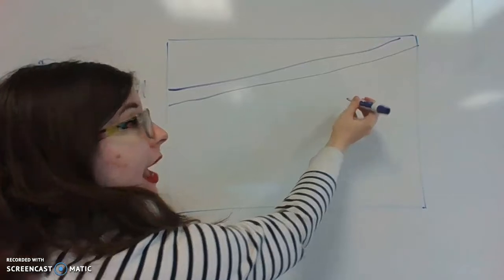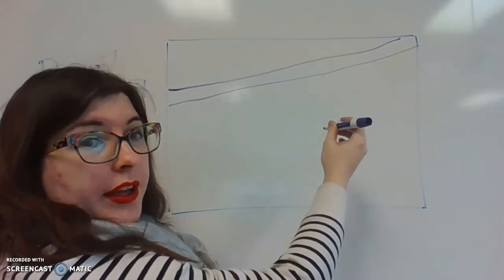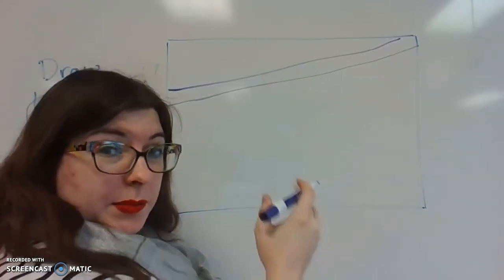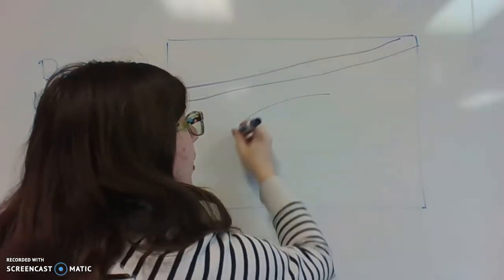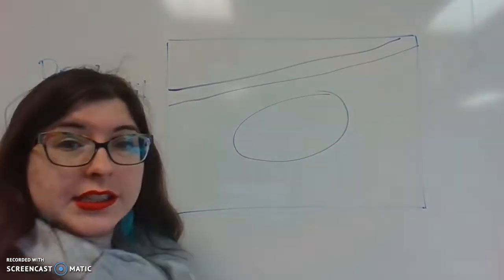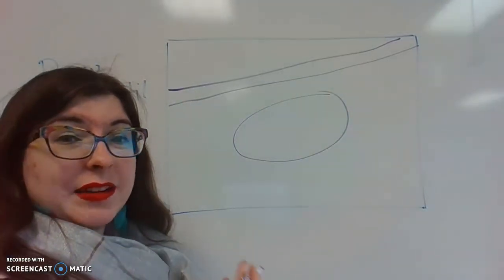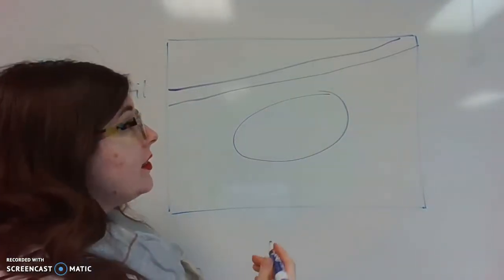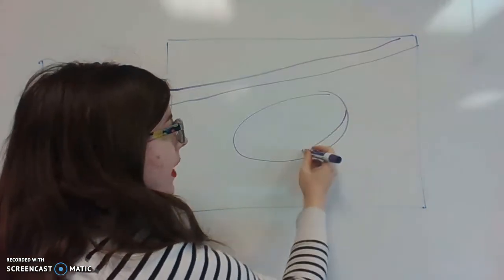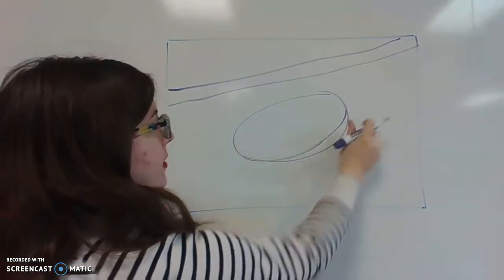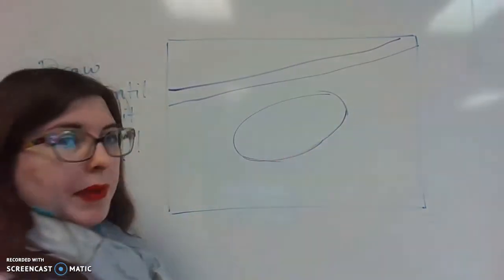So our oval is going to hang right below the branch. We want a little bit of space for his arms. I think that's a good size and again that's going to be the whole body. So I'm actually going to alter my oval just a bit. I like that better.